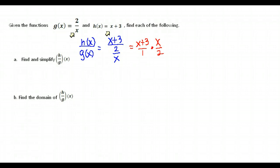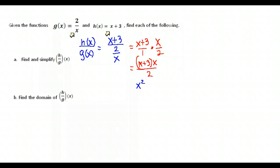We flip 2 over x to get x over 2 and multiply. That gives us x plus 3 times x, all over 2. You can leave it in this form, or if you prefer, distribute to get x squared plus 3x over 2. So there is the simplified version of our function h over g of x.